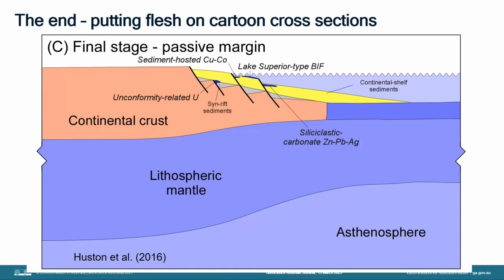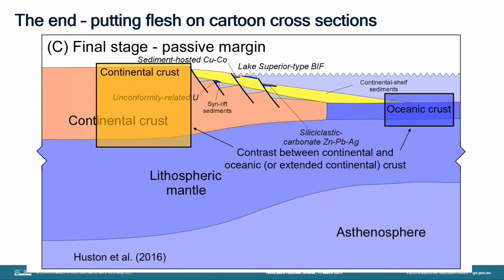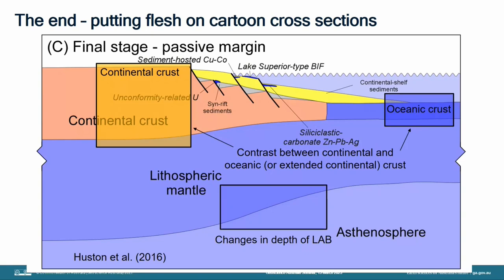What we're actually looking at is measuring the differences between continental crust and attenuated continental crust or oceanic crust. We're using the MT data, the lead isotope data, and the LAB data to actually measure the differences. We're looking at changes in the depths of the LAB and at gradients — gradients in geophysical data sets and gradients in geochemical data sets.